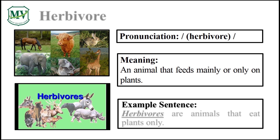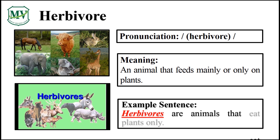Please repeat the word after me. Herbivore. Good job! Let's spell it. H-E-R-B-I-V-O-R-E. Herbivore. Great! Herbivores are animals that eat plants only. Can you try reading the sentence on your own? Great!